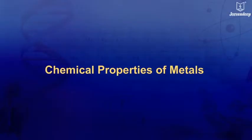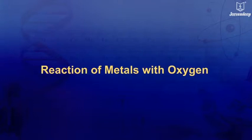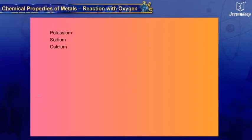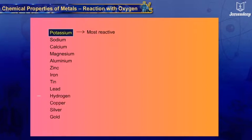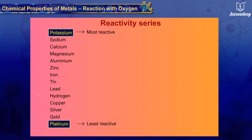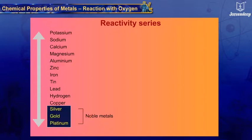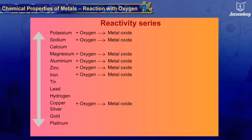Chemical properties of metals. Reaction of metals with oxygen: if we put the metals in order of their reactivity from most reactive down to least reactive, we get a list called the reactivity series. Going from bottom to top, the reactivity of metals increases. With the exception of noble metals like gold, all metals react with oxygen to form metal oxides.